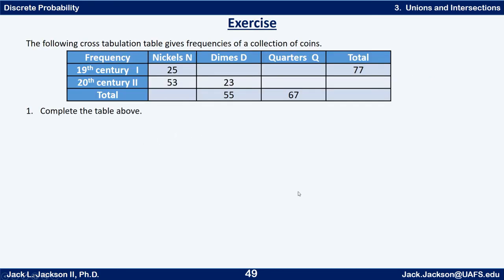Next I want to look at something called a cross tabulation table. I have a coin collection of nickels, dimes, and quarters — some from the 19th century and some from the 20th century, American currency. Part of this table is filled out for us. See if you can fill out the rest. Press pause and come back when you have it done.